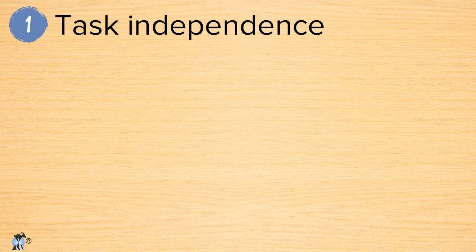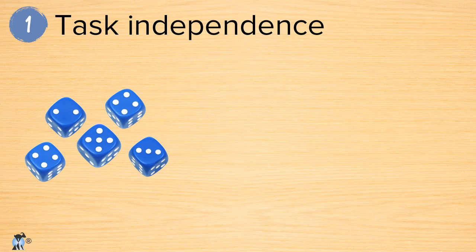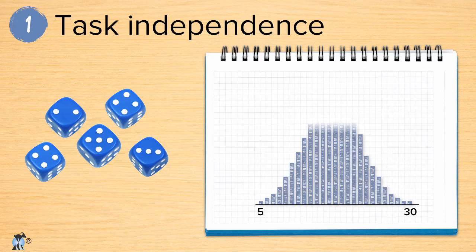The first problem traditional plans encounter is that tasks are assumed to be independent, but they aren't. To see why this is so, imagine we roll five normal six-sided dice and add up the number of pips on those dice. In the case here, the sum would be 18. Suppose we do this a bunch of times, and we graph the number of times we roll each possible total. We'd get something like the results being graphed here.